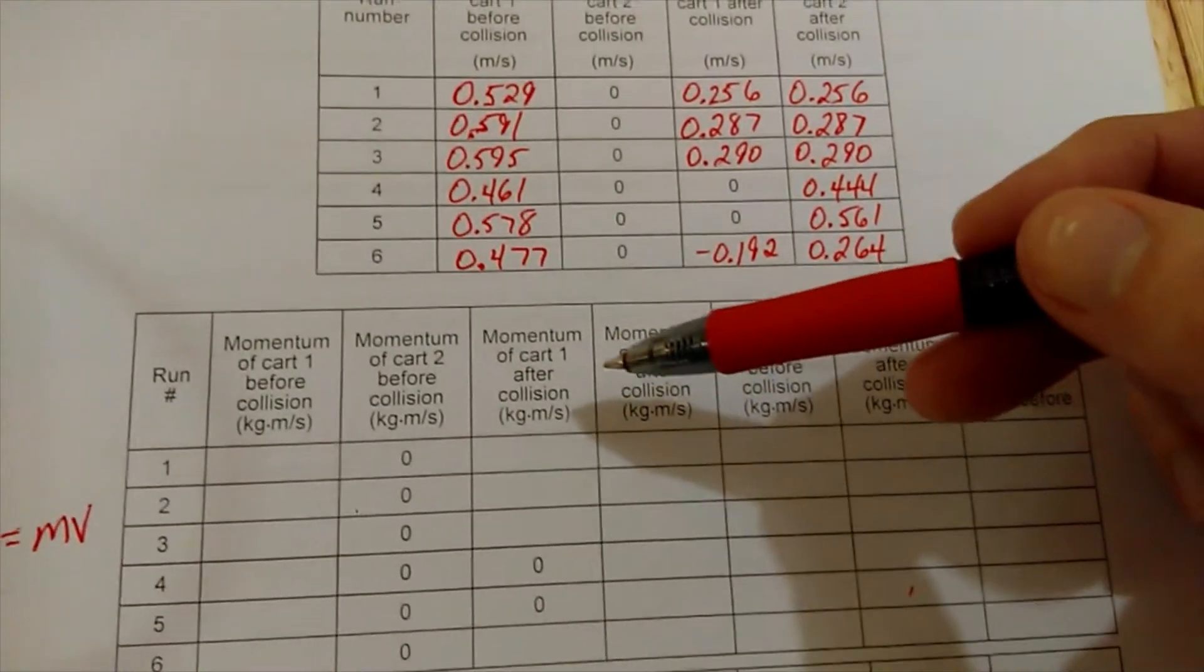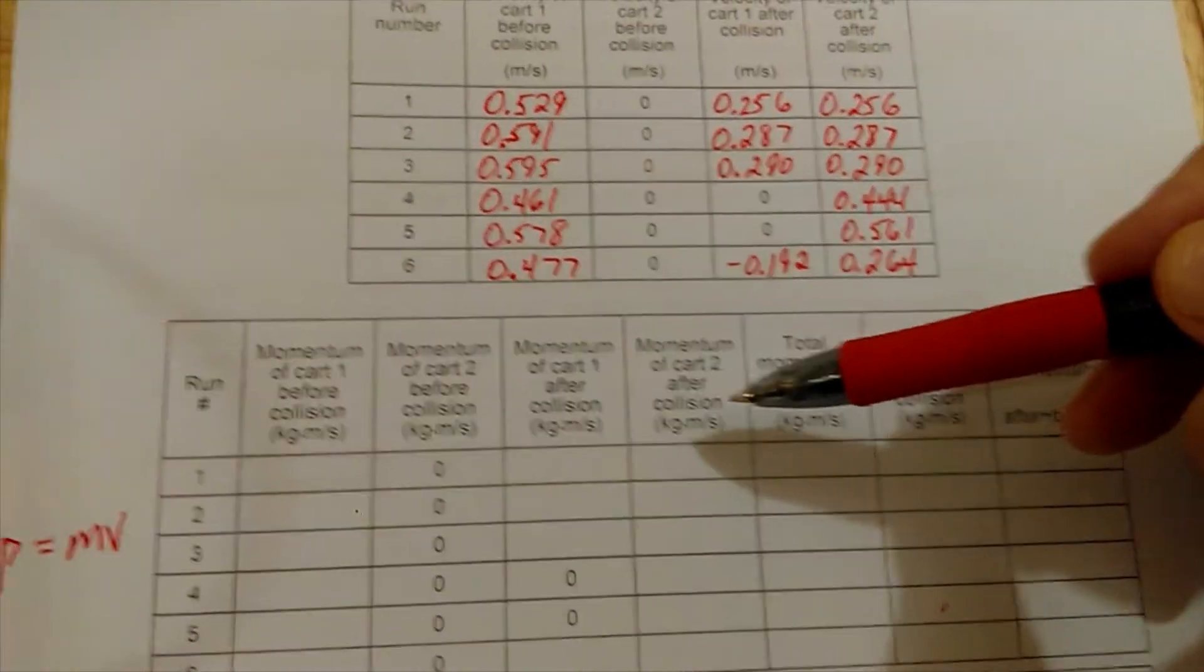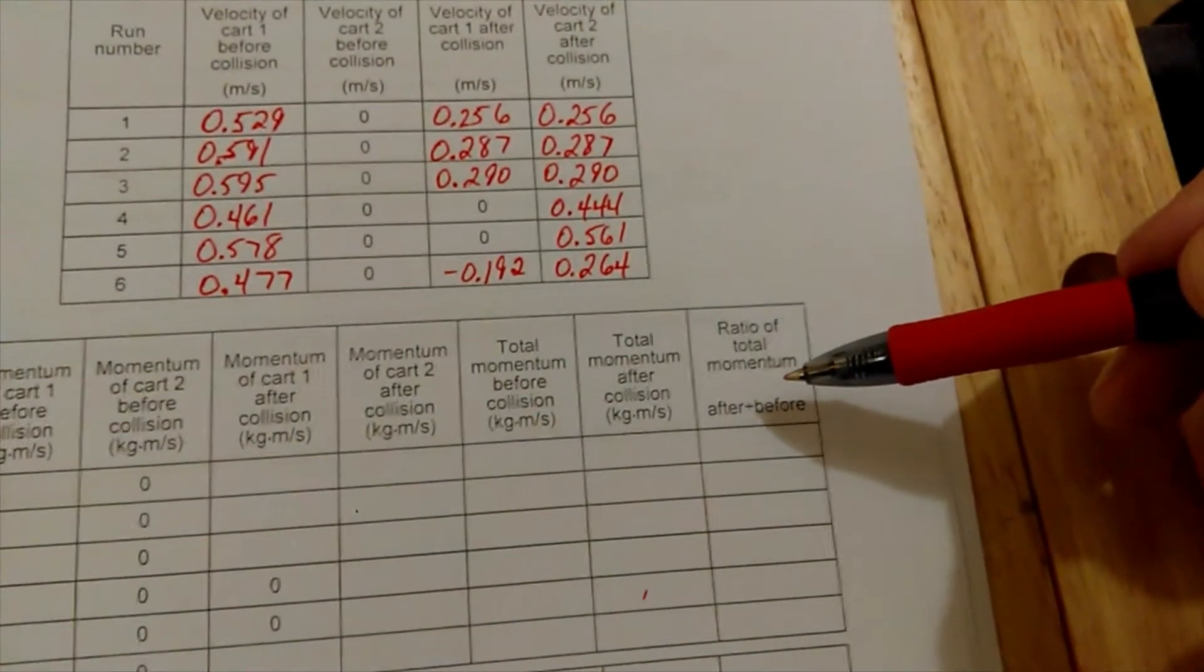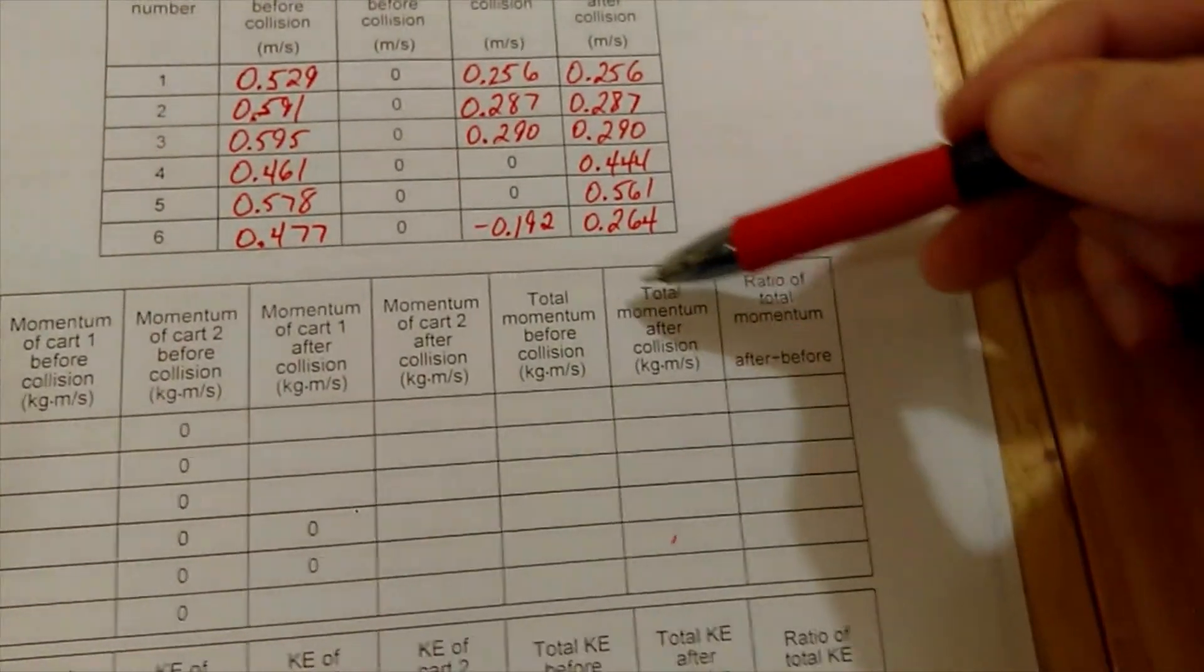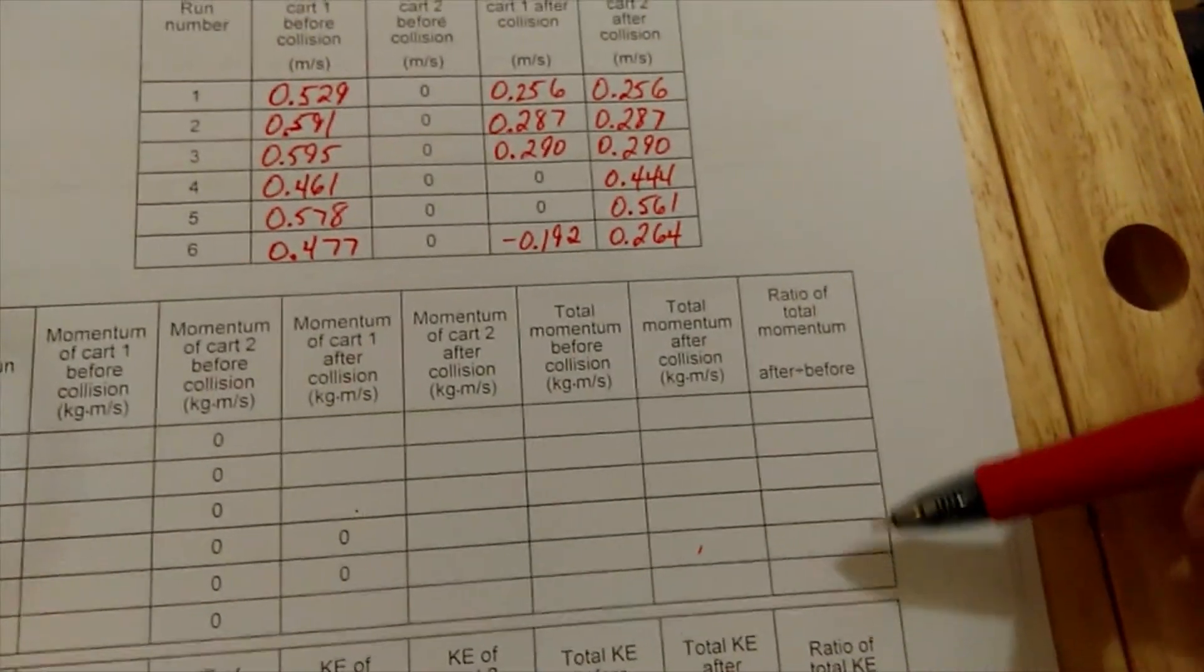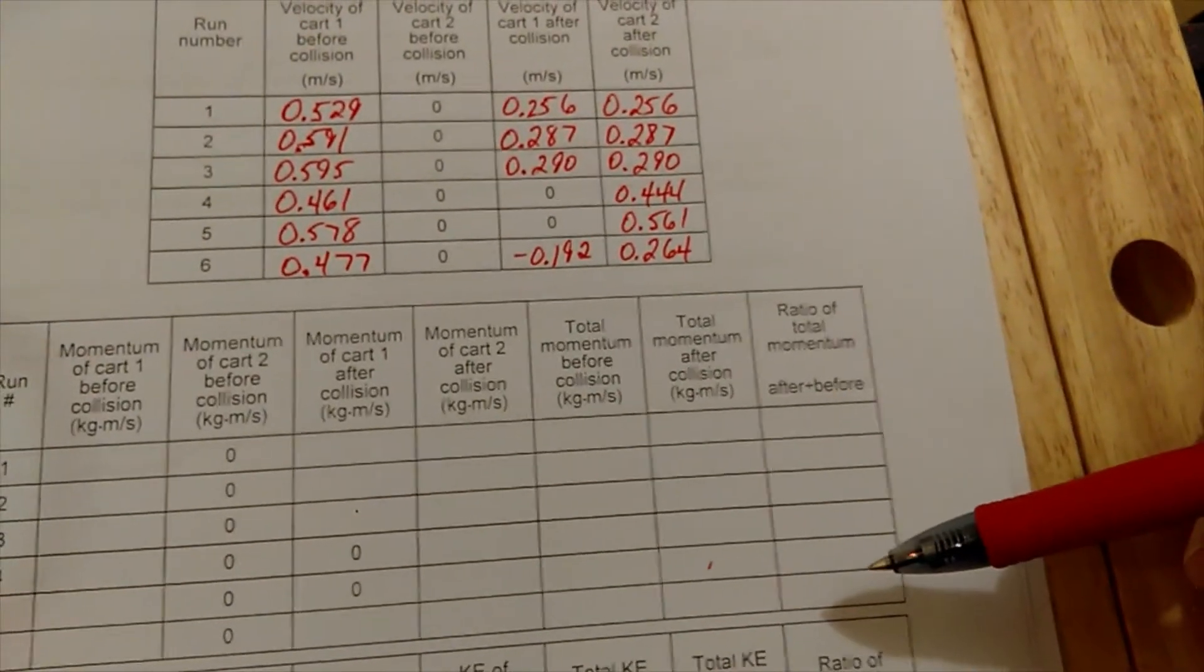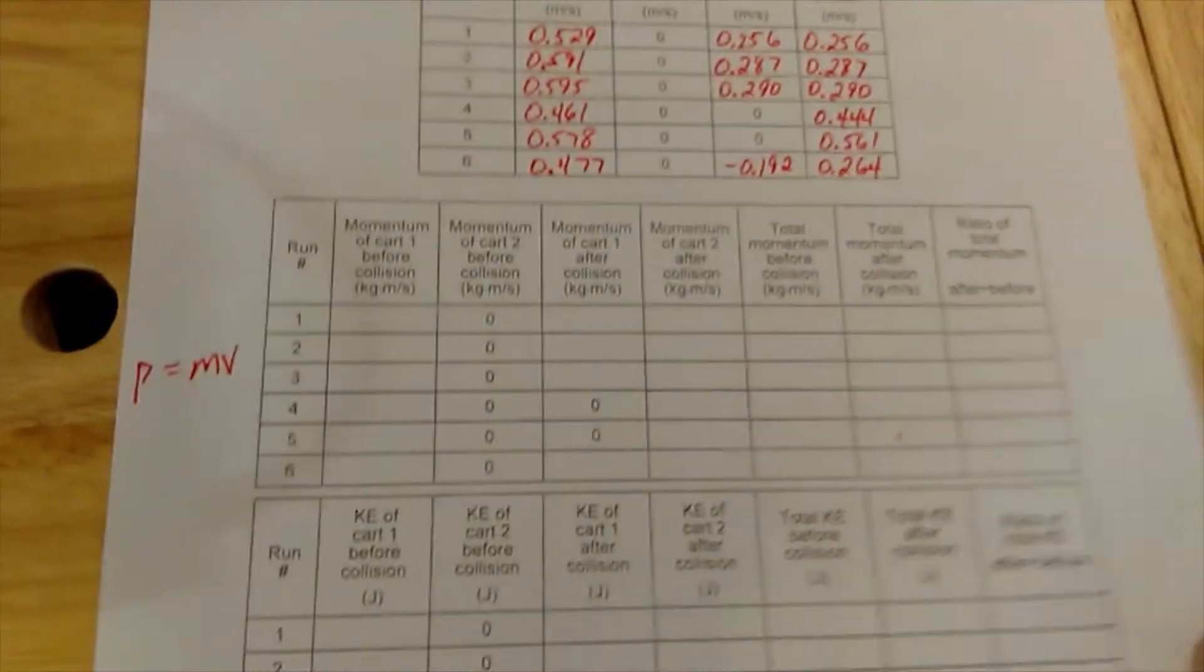Total momentum after the collision: take the momentum of number one after, momentum of number two after, and add those together. In the final column, you want this ratio. Take the total momentum after the collision divided by the total momentum before the collision. I'm just looking for a decimal, zero point whatever this decimal is.